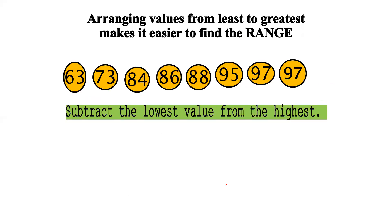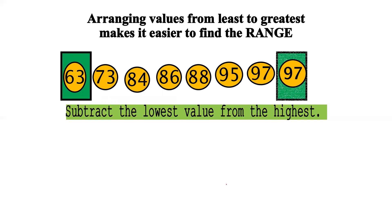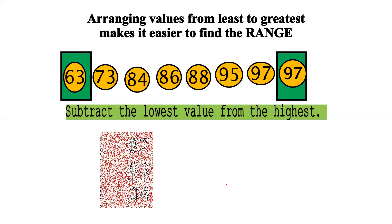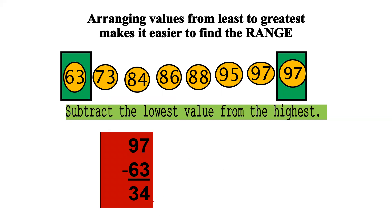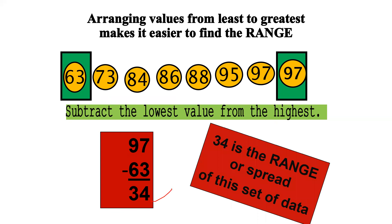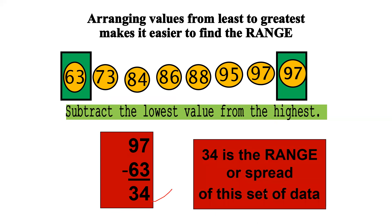First of all, we need to understand range. How do we get the range? If we have a given data set, the first step is to arrange it in ascending or descending order. Then we find out the minimum value and the maximum value in the given data set. Then we subtract the highest value minus the lowest value, which gives the range of the given data set — for example, 34 is the range or spread of a set of data.